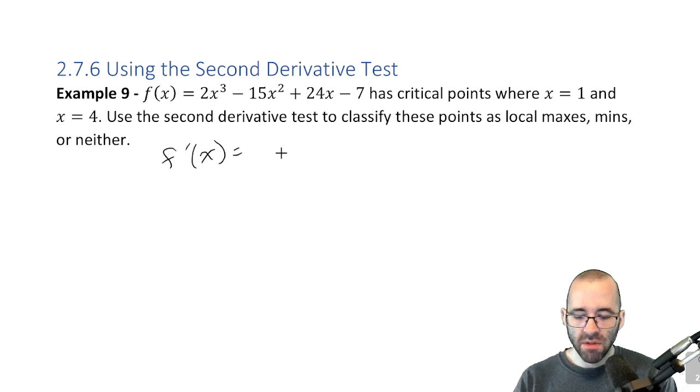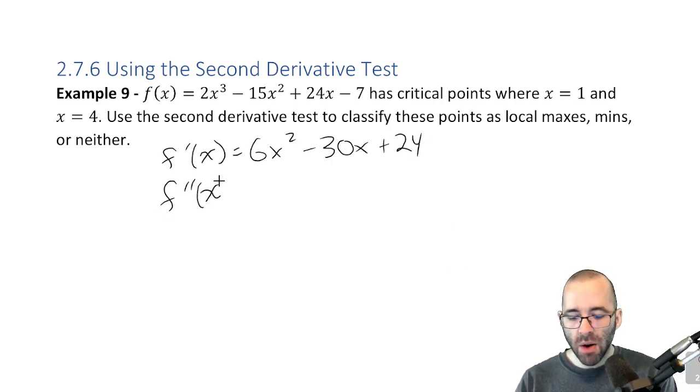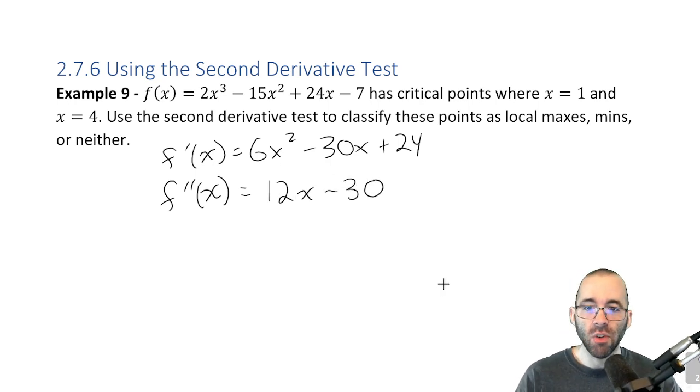The first derivative, using the power rule, is 6x² minus 30x plus 24. And the second derivative, using the power rule again, is just 12x minus 30. This second derivative was easy. It was just a polynomial. We just got to use the power rule twice.